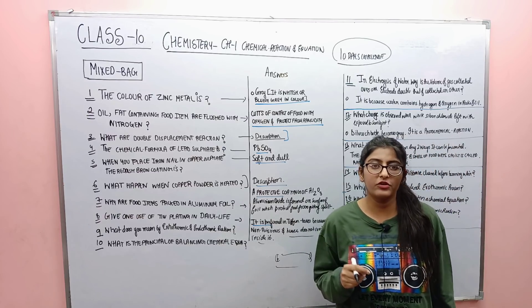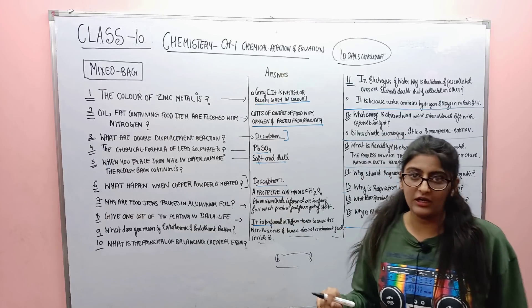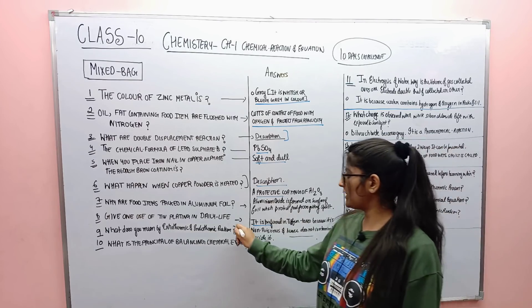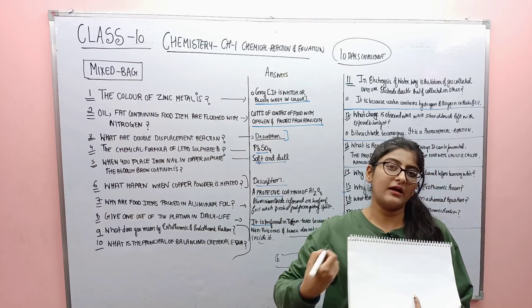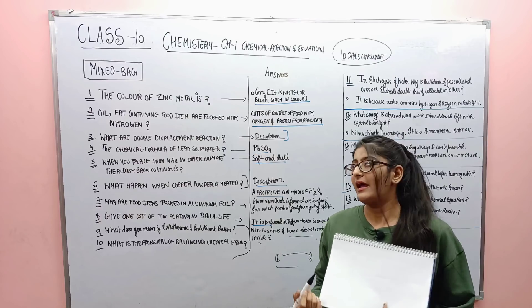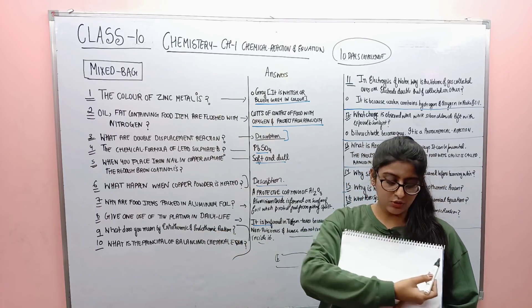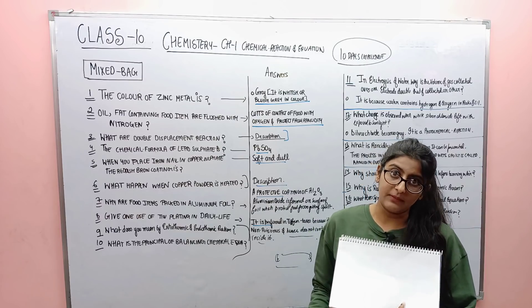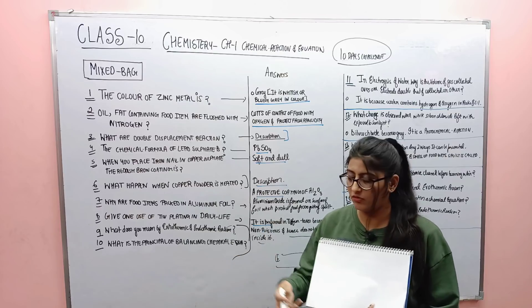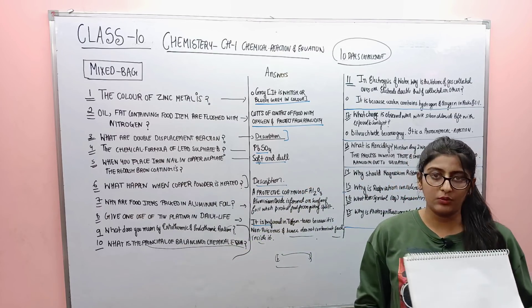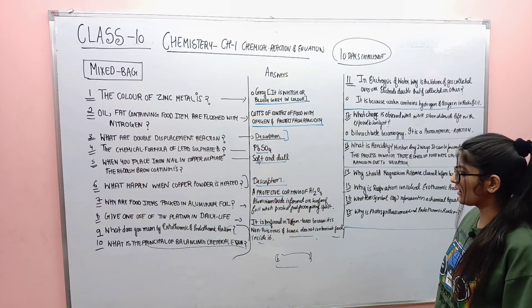The next two questions you have to attempt yourself — take a paper, write your answers horizontally, and title it 'Chemical Reactions and Equations Mixed Bag Test.' The questions are: what do you mean by exothermic and endothermic reactions? Also: what is the principle of balancing a chemical equation? This can come as a long answer, short answer, or one-marker. Check your answers in the description box.